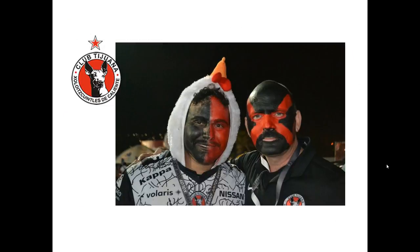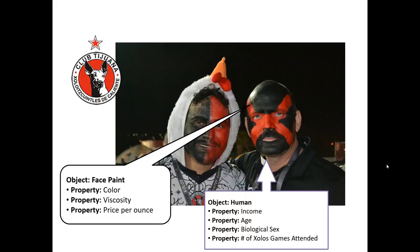Let's learn more about objective and subjective properties by looking at two fans of Club Tijuana, the professional soccer team in TJ. There are a few objects we can see in this image. There's clearly face paint. Some of the objective properties of face paint include its color, viscosity, and price per ounce — all things that can be measured and are clearly objective in nature.